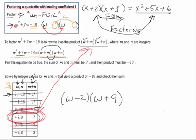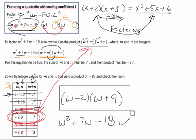Now let's always check. Let's just do a quick FOIL to make sure. We get w², and then our outer is 9w. Our inner is minus 2w. That makes a positive 7w. And then our last is negative 18. Hey, that's just what we started with, so that checks out, confirms this is the correct answer.